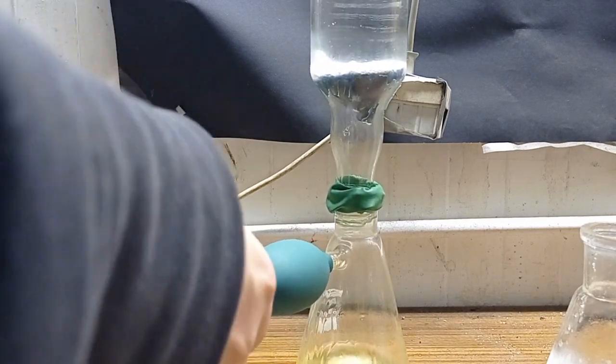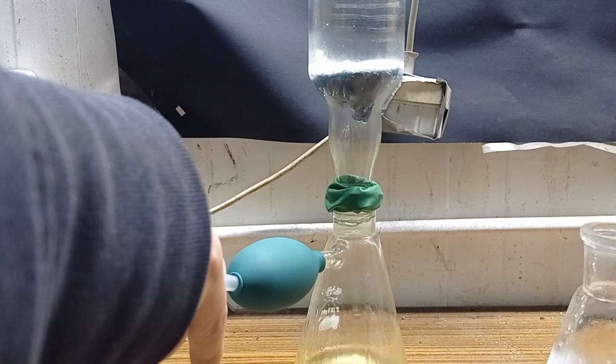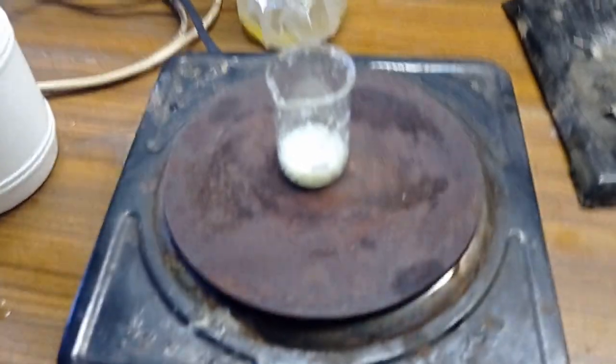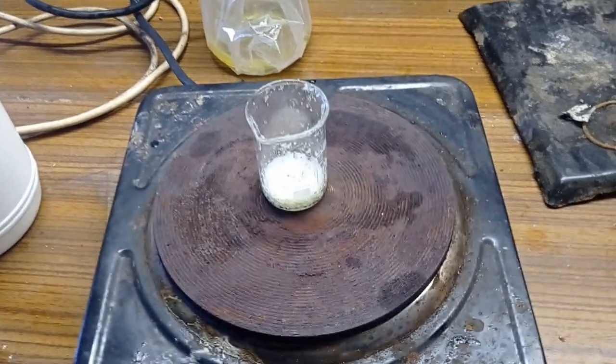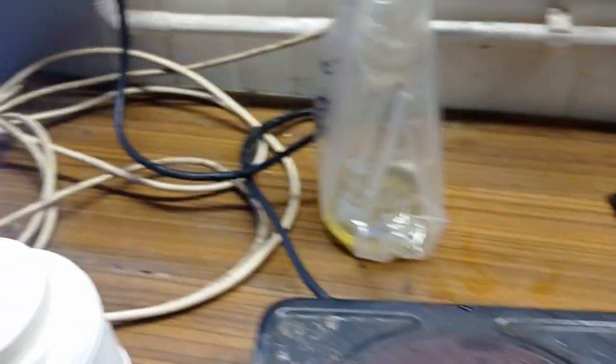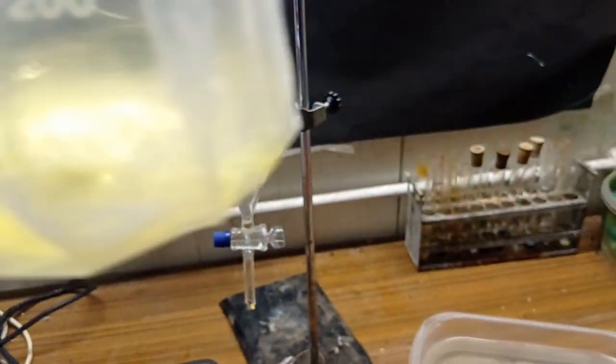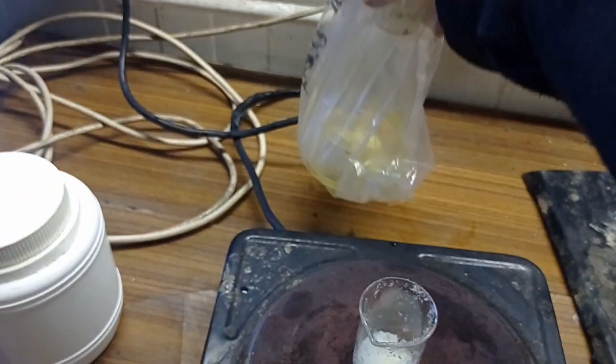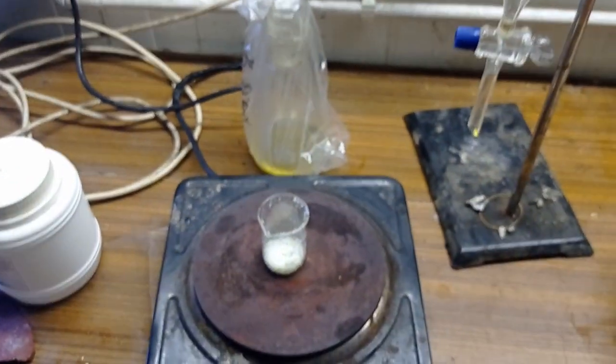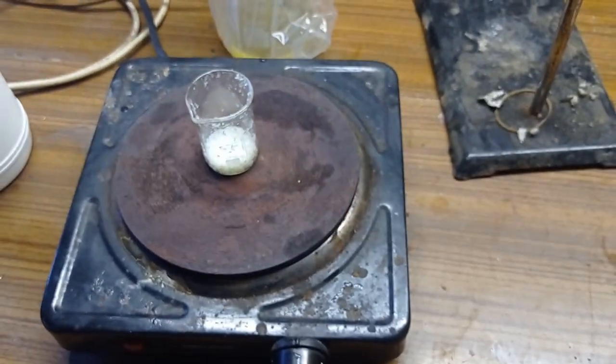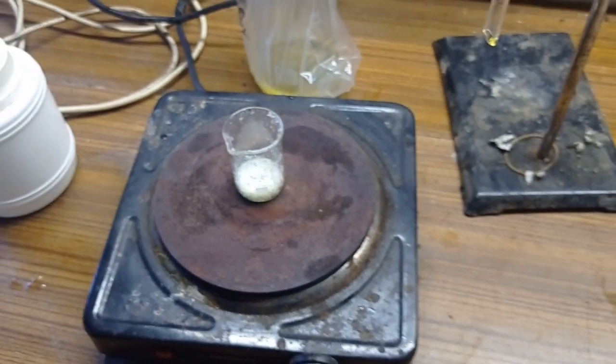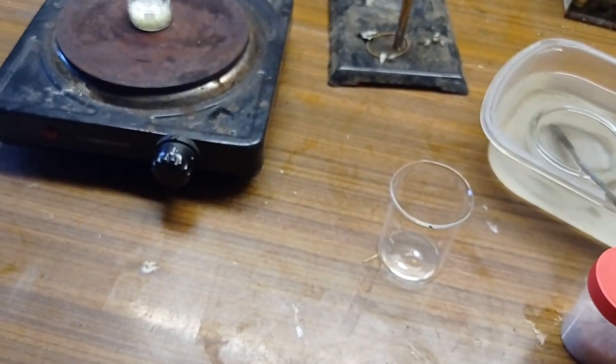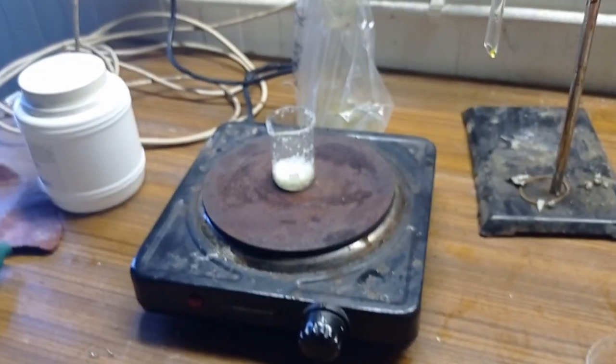Yeah, those crystals are para-nitrotoluene isomer. Okay, so that's everything I got from the second run of freezing. As the mixture, nothing crystallized out, so yeah that's everything, and now I will recrystallize it from ethanol.